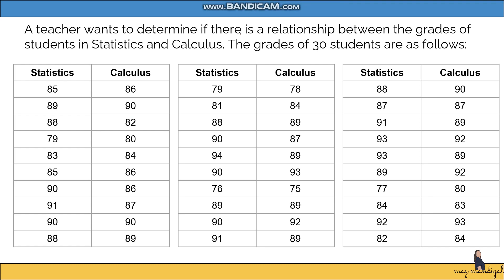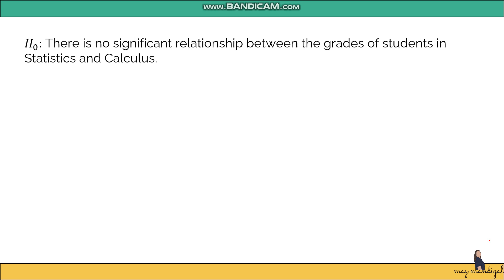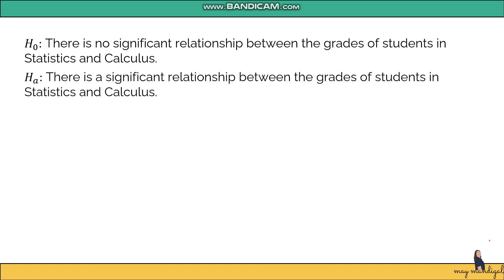Next example: a teacher wants to determine if there is a relationship between the grades of students in statistics and calculus. Grades of 30 students are provided. The null hypothesis is: there is no significant relationship between the grades of students in statistics and calculus. The alternative hypothesis is: there is a significant relationship between the grades of students in statistics and calculus. Alpha is 0.05.